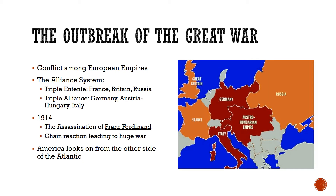Before we can talk about America's role in World War I, we have to start by looking at World War I in general. World War I was originally known as the Great War, because we didn't know there was going to be a Second World War, and because it was the biggest war we had ever seen up to that point. It starts as a conflict among the major European empires — the strongest and most advanced countries in the world, other than the United States. All these countries are doing whatever they can to compete with each other and get stronger, and because they're all competing, tensions build and they all start preparing for war.